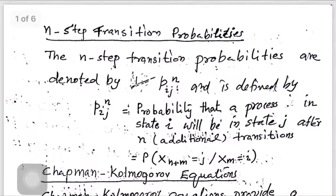In the last discussion we had a probability P_ij, that is the probability of the process going from state i to state j in one step, and that was called the one-step transition probability. The corresponding matrix was called a one-step transition probability matrix.